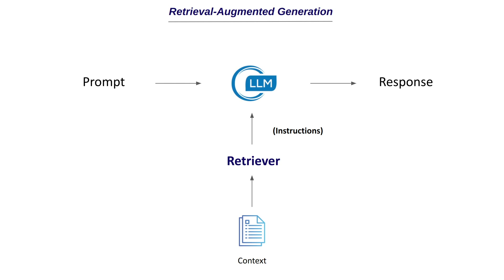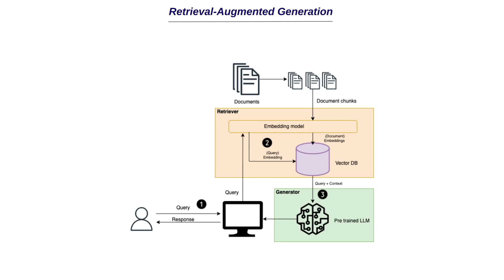Now let's discuss the architecture of a retrieval augmented generation framework. This image explains it clearly. Let's say this is the chatbot application we are building, and the user is asking a query based on a document — though this could also be an article on the internet with the latest information. For simple understanding, let's consider a document, such as legal documentation, from which the user wants to get specific information. This document is first split into multiple chunks.